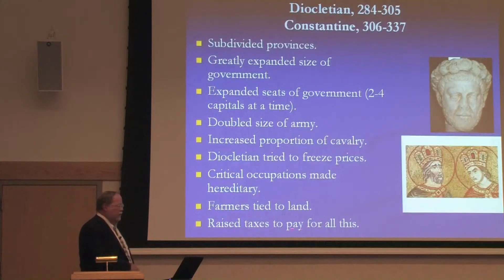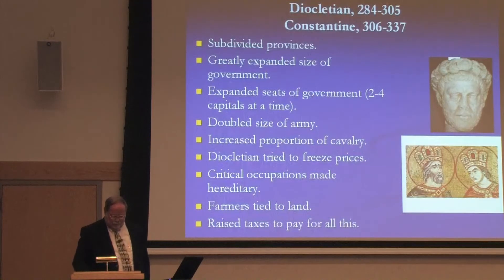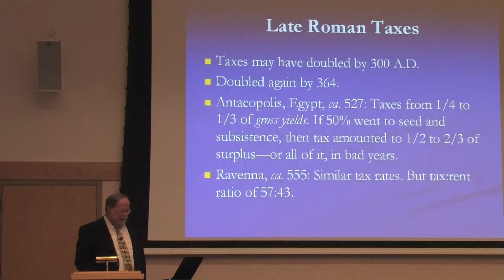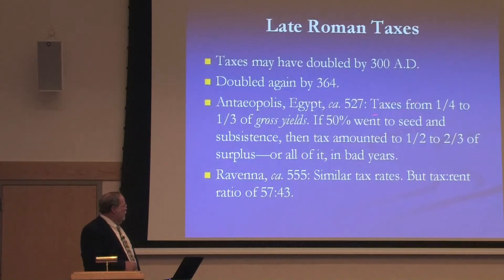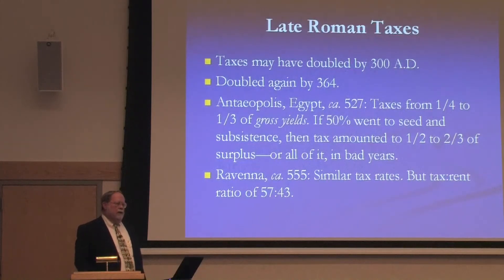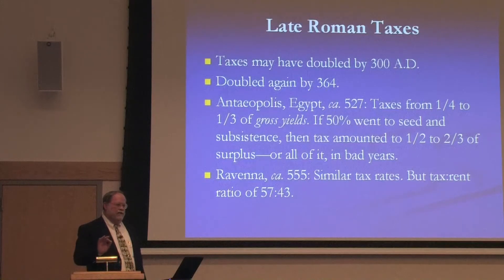They had to raise taxes to pay for all of this. It wasn't free — it was higher complexity, and of course it wasn't free. Taxes may have doubled by 300 A.D., and then it looks like they doubled again by about 364. From documents from slightly later time periods, we know that taxes took from a fourth to a third of gross yields. But this was in an ideal year. One of the reforms of Diocletian was that every unit of land across the entire empire was assessed for the production it was supposed to achieve every single year.